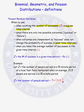So just as a recap: the binomial distribution is used when you are counting the number of successes in a fixed number of trials. The geometric distribution is used when you are counting the number of trials needed to get your first success. And the Poisson distribution is used when you are counting the number of successes in a given time interval. These are the three commonly used discrete probability distributions.